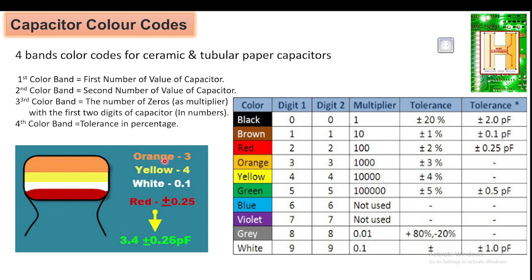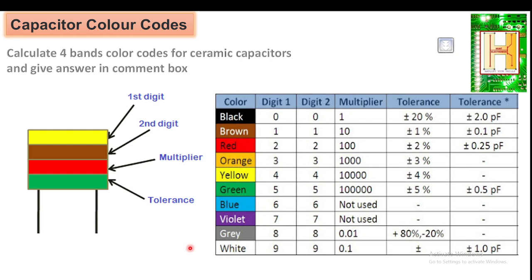For example: the first band is orange, which stands for 3; the second is yellow, which stands for 4 — so it becomes 34. The third band is white, which is the multiplier 0.1, giving 34 × 0.1 = 3.4. The last band is red, which gives a tolerance of plus or minus 0.25 picofarad or plus or minus 2%. So the capacitor value is 3.4 ± 0.25 picofarad.